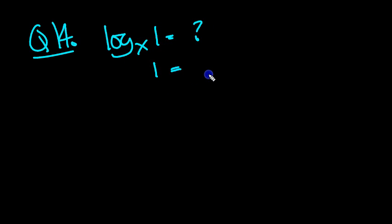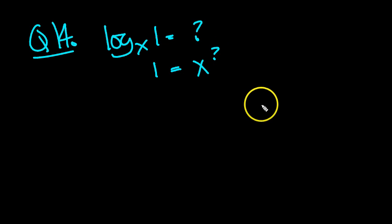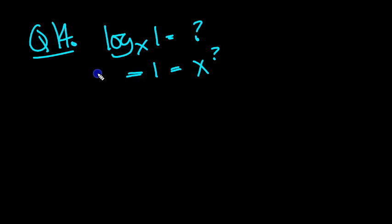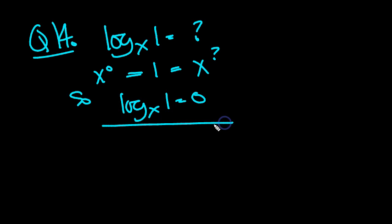So x to the power of question mark equals 1. Basically, we're asking what power of x gives 1. Well, we know that to be 0, don't we? x to the 0 — anything to the power of 0 is 1. So log x of 1 equals 0. Good.